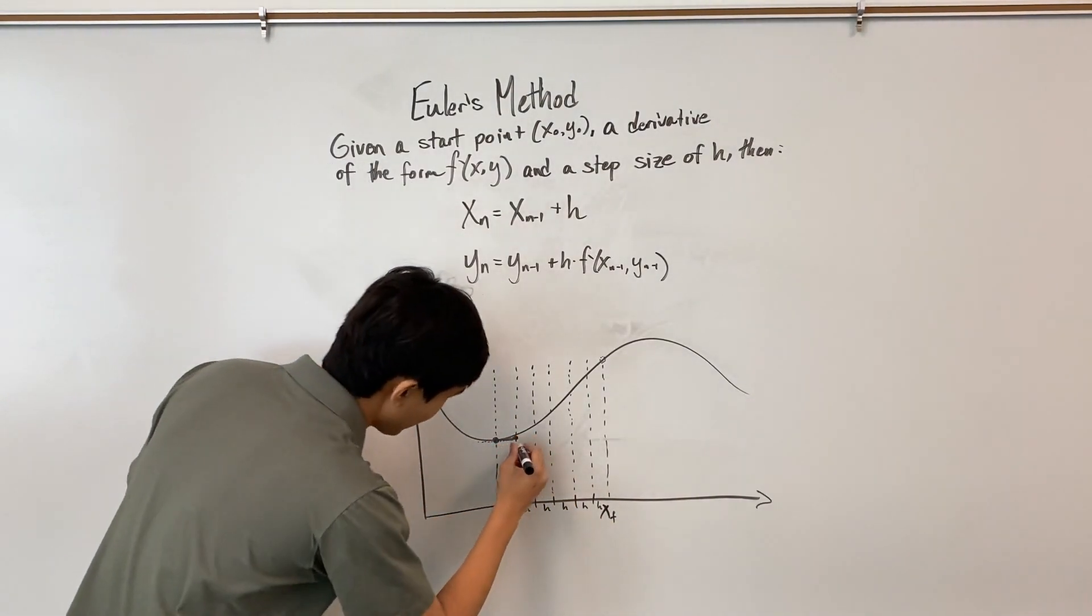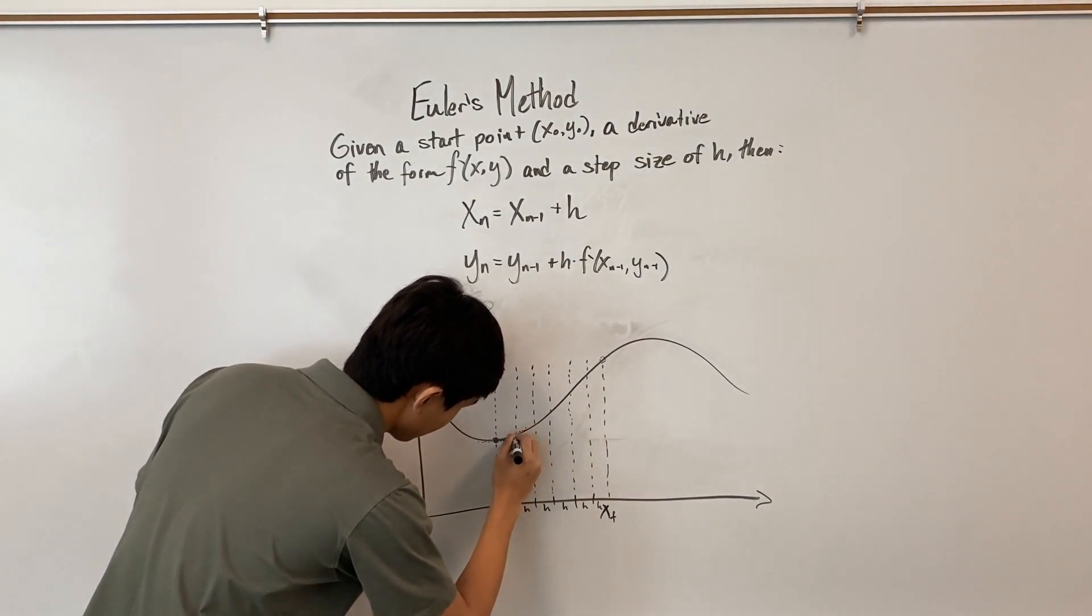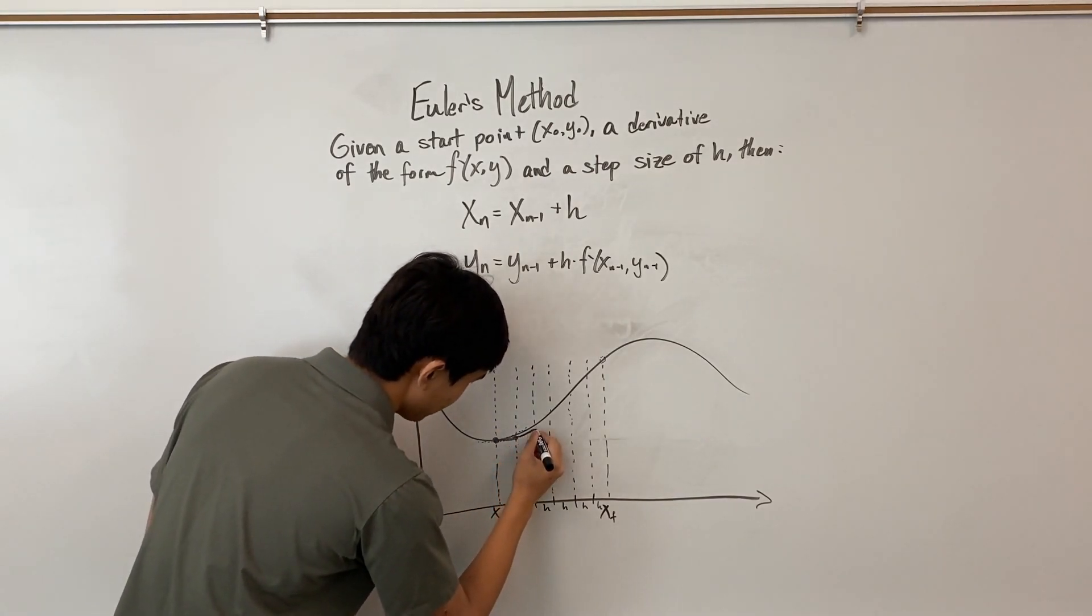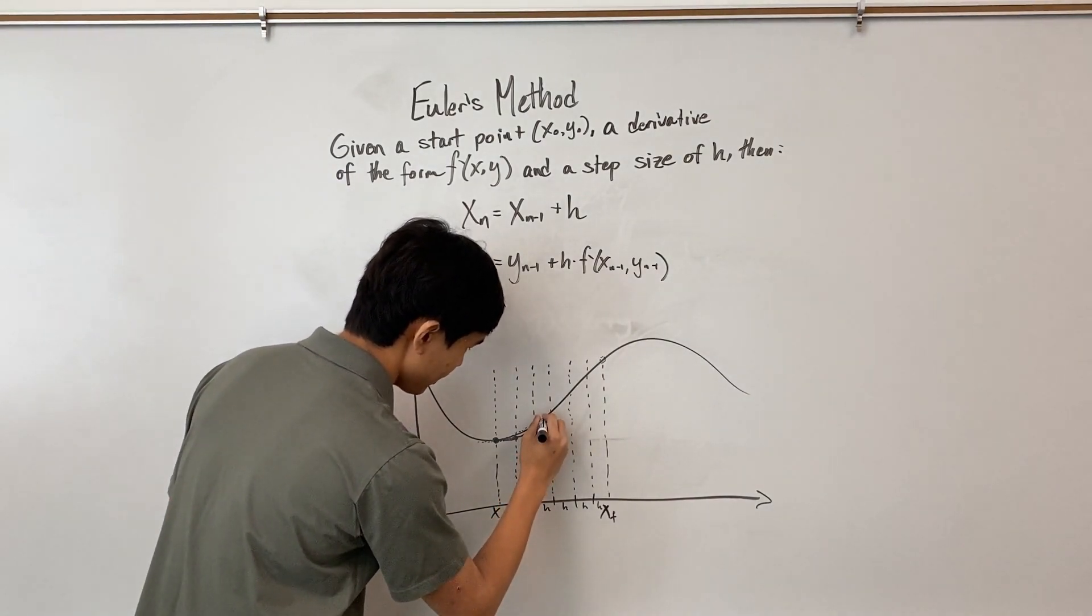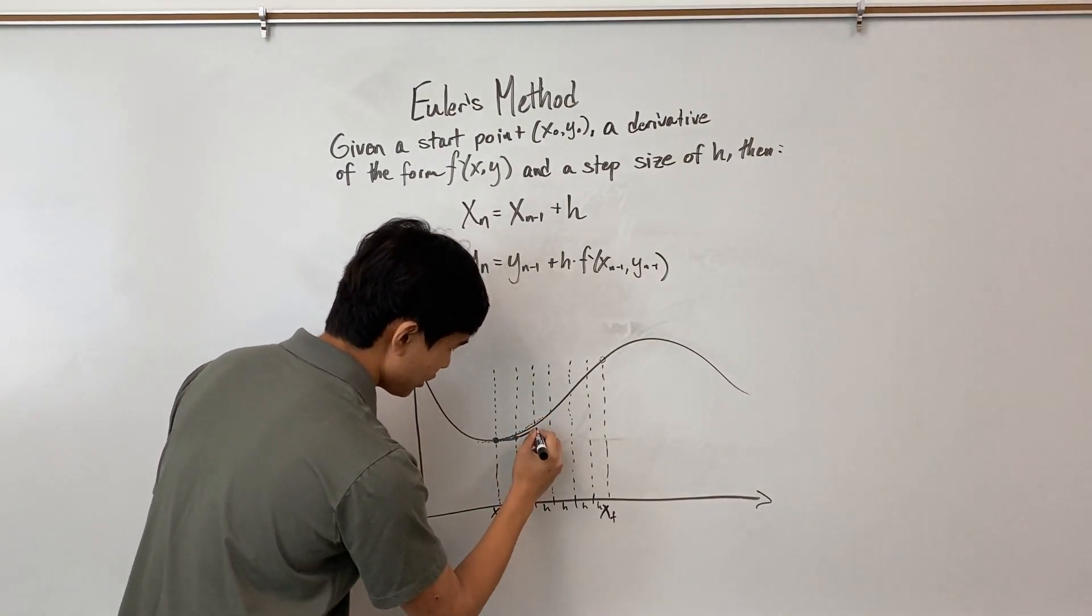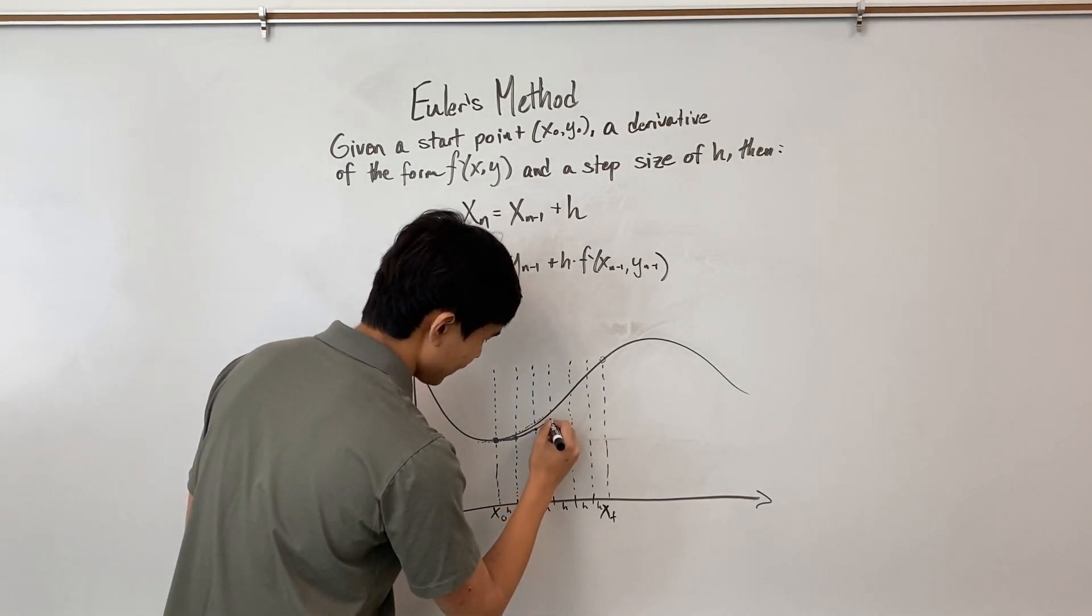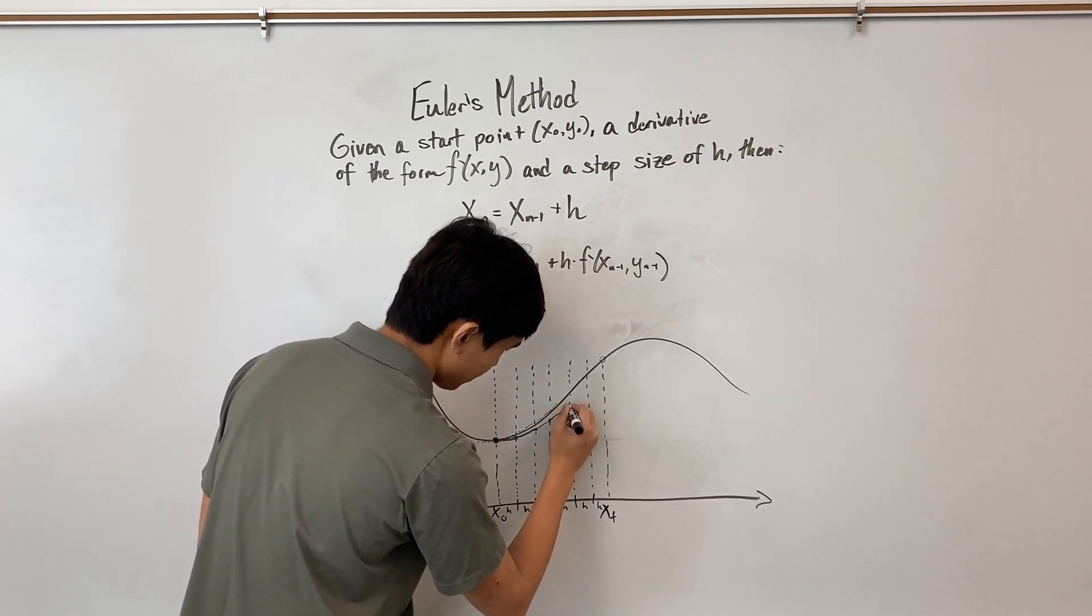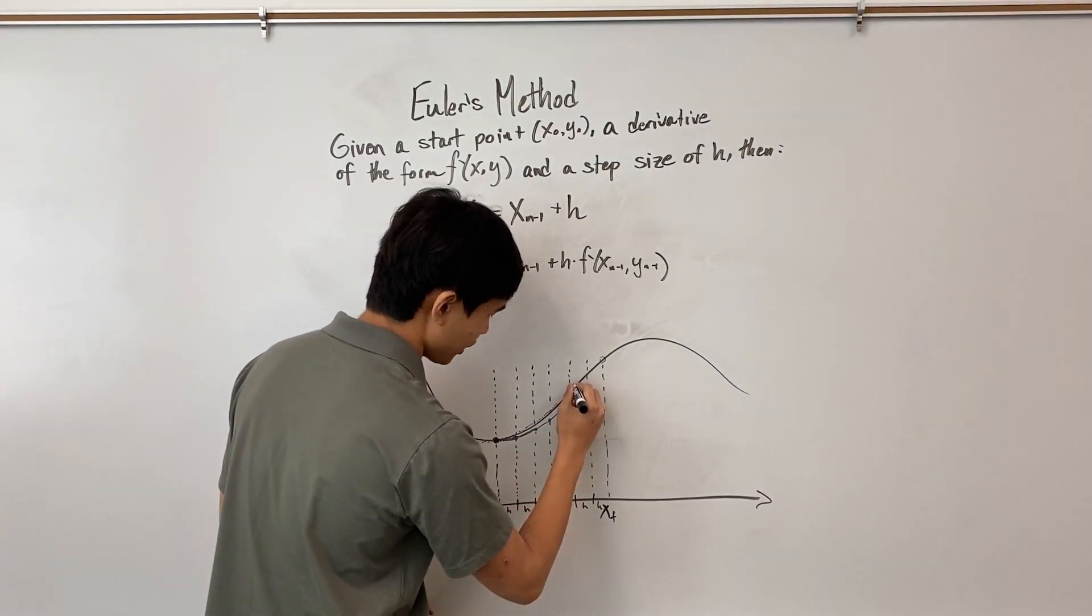So here, the tangent line to the curve is something like this. So we're going to follow this tangent line until we get to our next stop. And then here, it's something like this. So we're following this tangent line here. This is our next stop. And at this point, it's something like that. So we're going to keep following until we get here. And we're just going to keep going.